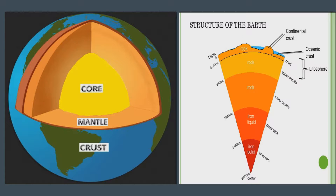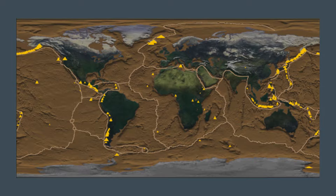There are three layers that the Earth is made of. First, the outer layer called the crust, and then the second layer called the mantle, and the inner layer is called the core. If you look at the yellow dot, that means it is a Volcano. Volcanoes are more likely to happen on the plate boundary, meaning the connection between each plate allows the molten rock inside the core to come out more easily.